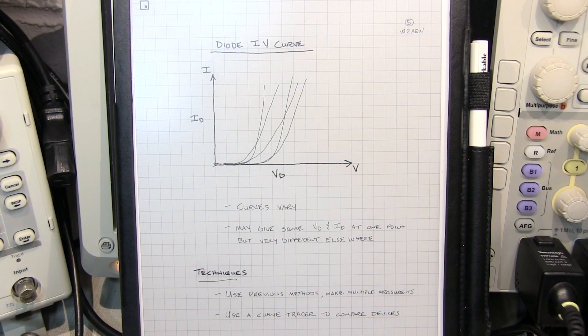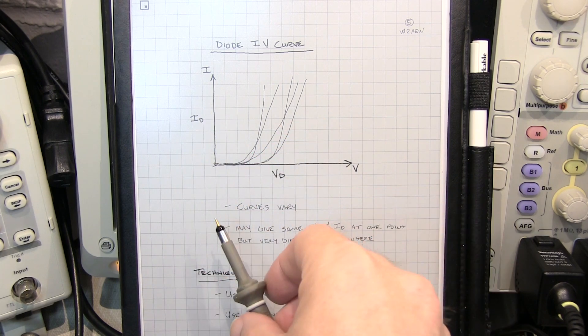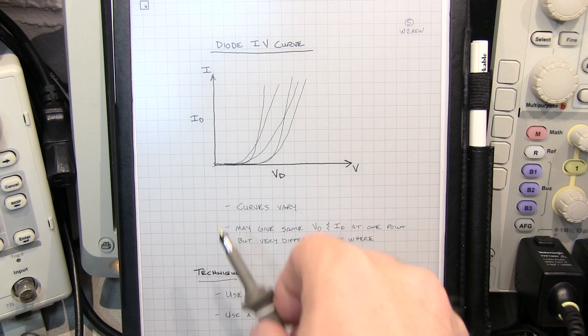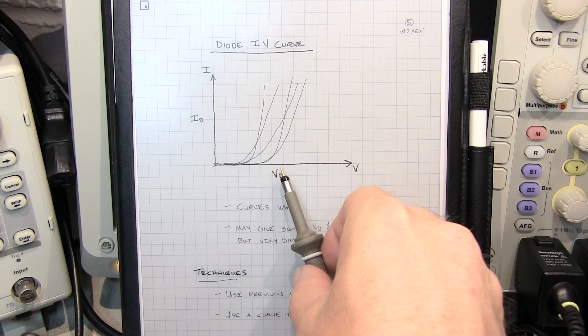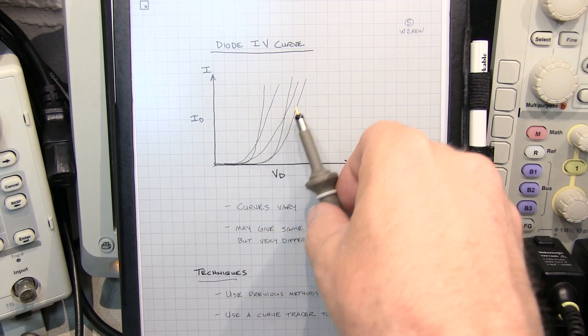And one of the downsides of all the methods we've mentioned thus far is that they make the diode voltage measurement at one particular test current. And that's okay if that's the only place where they need to match, because the reality is, is that the IV characteristics of the diodes can vary, even within the device family. You can have devices that turn on late, but have a very steep turn on. You can have devices that turn on early, and have a very shallow turn on.